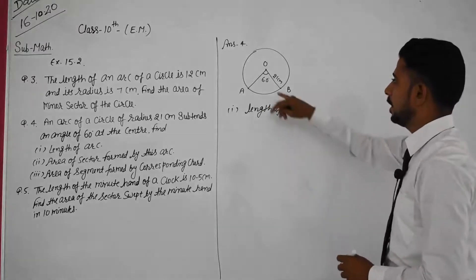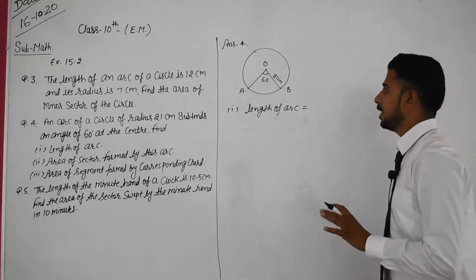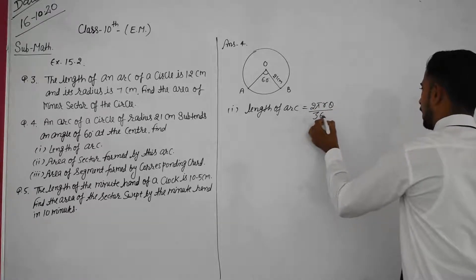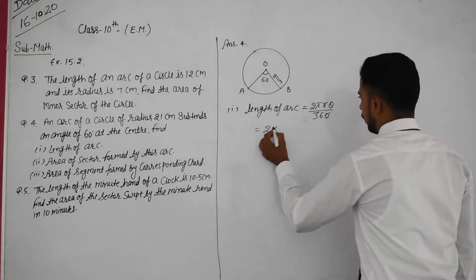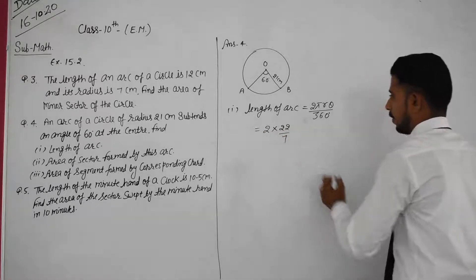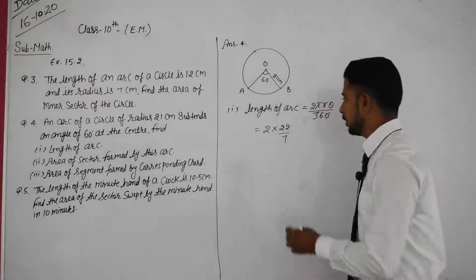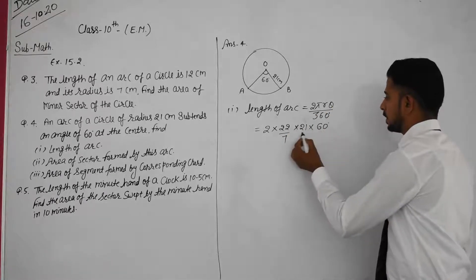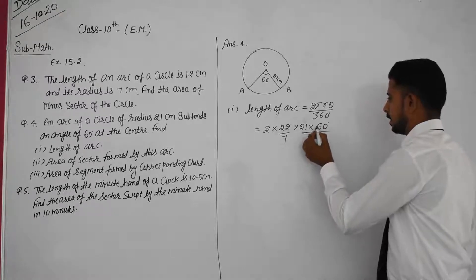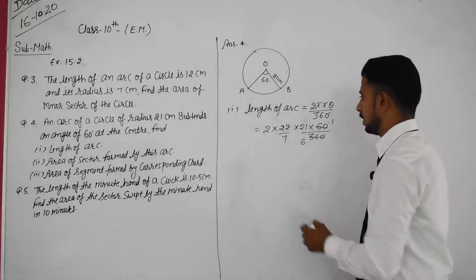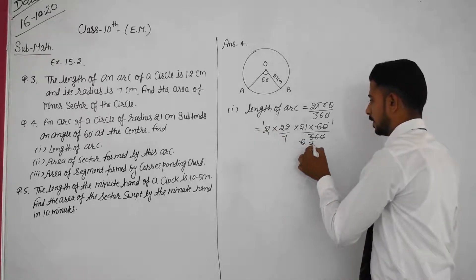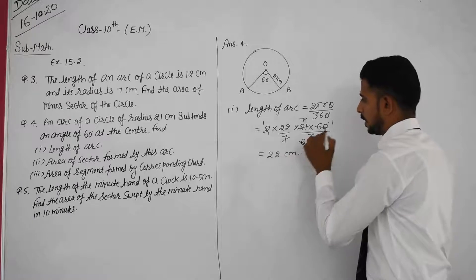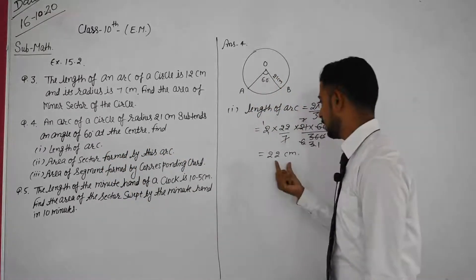When angle theta and radius are given, the length of arc is equal to 2πRθ upon 360 degrees. So the value is 2 into π (which is 22/7) into R (which is 21) into theta (which is 60 degrees) upon 360. After cancellation — 7 and 7 cancel — the value is 22 cm. So the length of arc is equal to 22 cm.